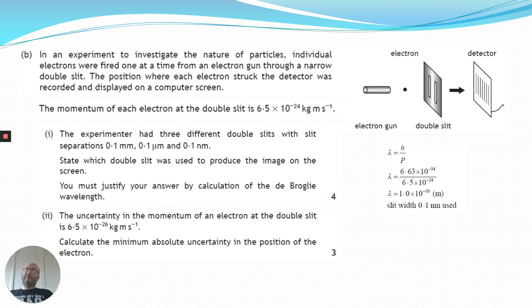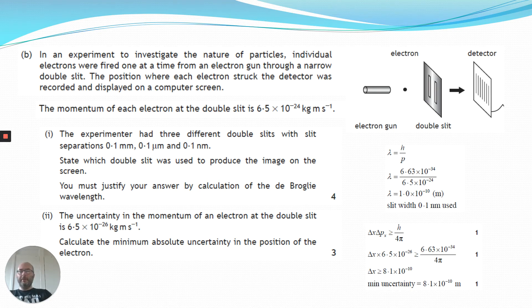Part two, the uncertainty in the momentum of electron at the double slit is 6.5 times 10 to the minus 26. So a couple of orders of magnitude less than the actual momentum. Calculate the minimum absolute uncertainty in the position of the electron. Notice it's the minimum position because, of course, our Heisenberg uncertainty principle is not necessarily an equality. It gives us the minimum uncertainty. So delta X delta P, H over 4 pi. Now we've got delta P, so we can plug that in straight away. So we've got delta X times 6.5 times 10 to the minus 26. The right-hand side is always a given, and that never changes. And therefore, we can say that our absolute uncertainty is a minimum of 8.1 times 10 to the minus 10 meters.